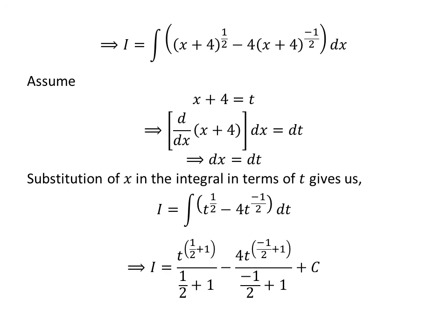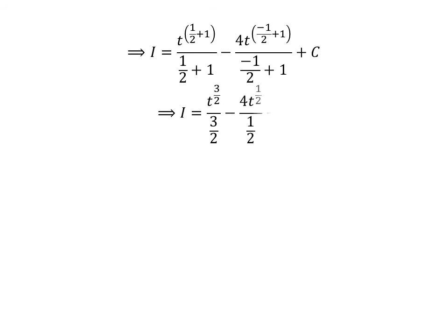Capital C is the arbitrary constant of the indefinite integral — we will never forget to add this constant. As half plus 1 is 3 upon 2 and minus half plus 1 is equal to half, so i is equal to t raised to the power of 3 upon 2 upon 3 upon 2 minus 4 times t raised to the power of half upon half plus capital C.